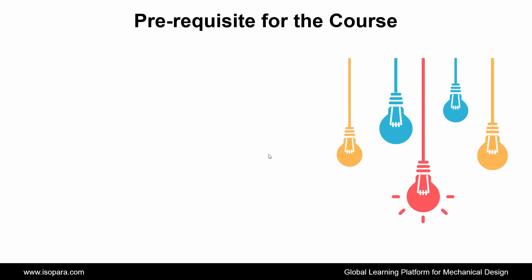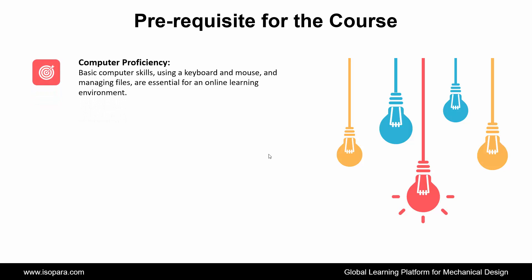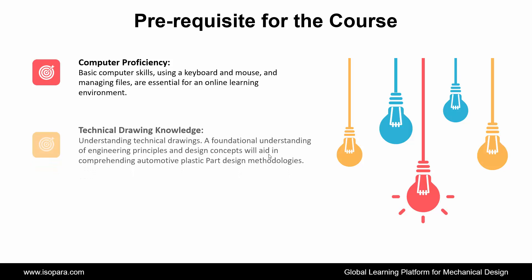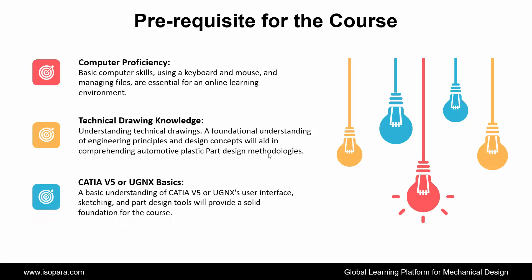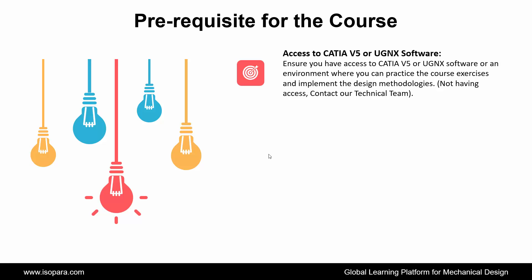Now we see the prerequisites required for this course. First is Computer Proficiency: basic computer skills — using a keyboard and mouse and managing files — are essential for an online learning environment. Second is Technical Drawing Knowledge: a foundational understanding of engineering principles and design concepts will aid in comprehending automotive plastic part design methodologies. Third is CATIA or UGNX Basics: a basic understanding of CATIA or UGNX's user interface, sketching, and part design tools will provide a solid foundation. Fourth is Access to CATIA or UGNX Software: ensure you have access to CATIA or UGNX software to practice exercises and implement design methodologies. If not, contact our technical team.